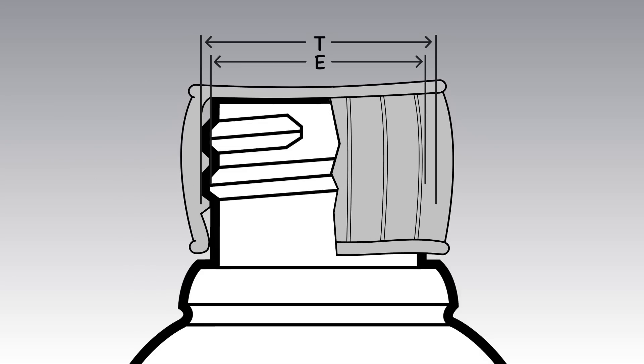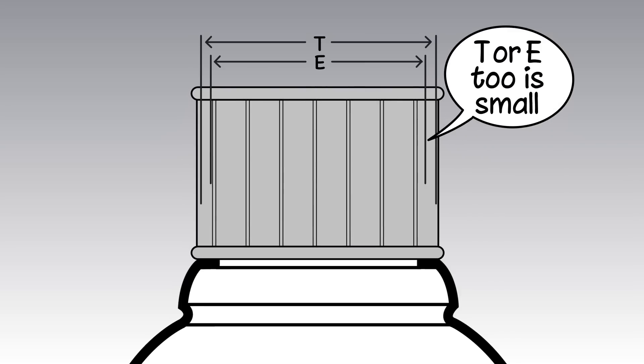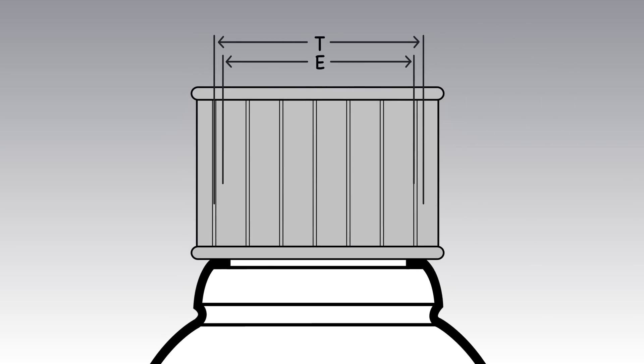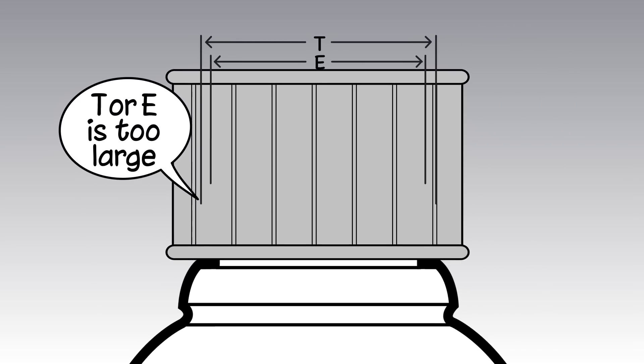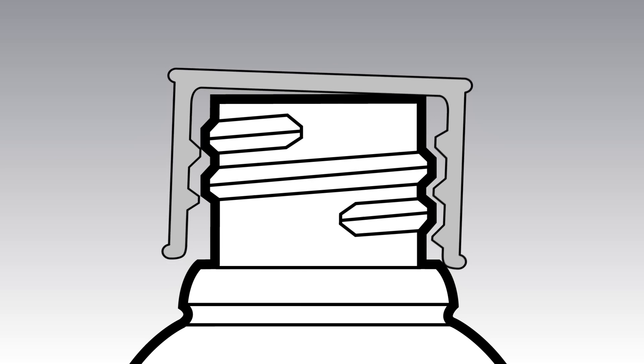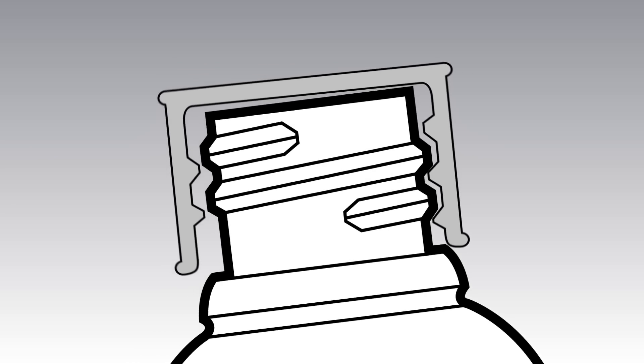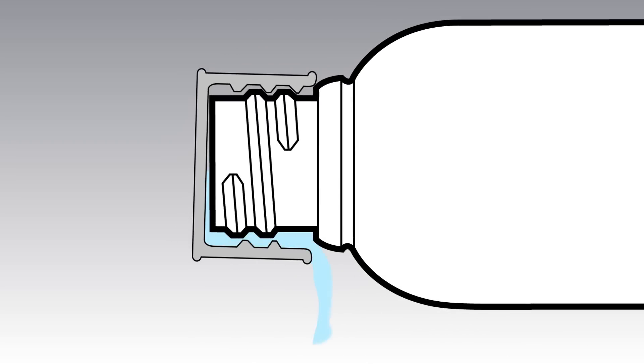Conversely, if the bottle's T or E dimension is too small, or the closure's T or E dimension is too large, the threads will not engage the full thread land area. This will cause torque retention problems and potential leakage issues.